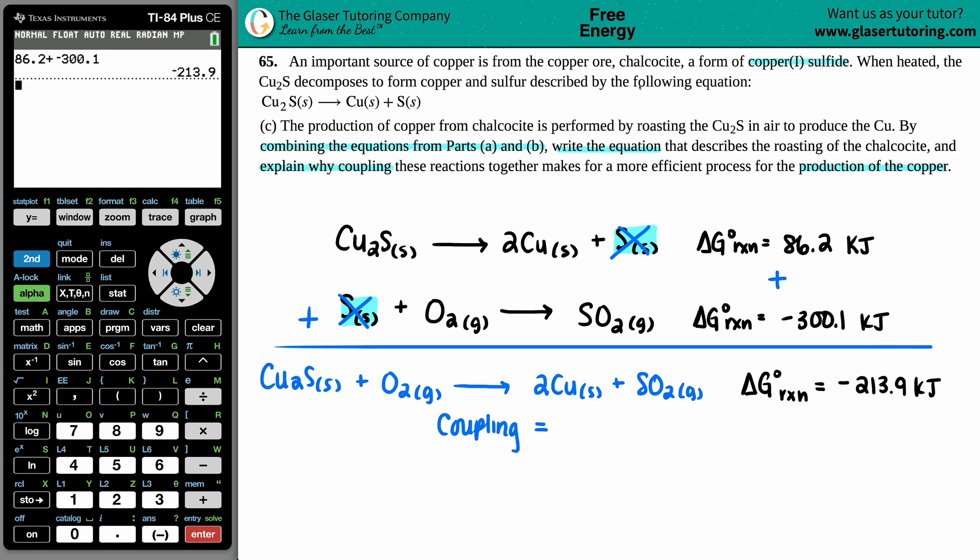By coupling, we get a delta G that's a negative value—specifically negative 213.9, but it's negative nonetheless. So by coupling this reaction, I'm producing a delta G that's negative. And remember, a delta G that's negative is always a spontaneous reaction. This means that I do not need any additional energy to produce my product. A spontaneous reaction is always favorable.